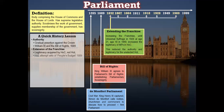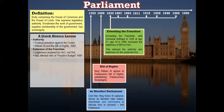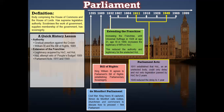It wasn't until 1911, when the House of Lords attempted to veto the People's Budget of 1909, that the House of Commons acted to limit their power. The Parliament Acts of 1911 and 1949: 1911 established that the House of Lords, as an unelected body, could only delay and not veto legislation passed by the House of Commons, and the delay was set at two years. This was reduced by a further year in 1949 so the House of Lords could delay legislation for one year only.